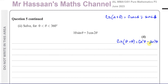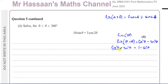Because we have sin θ on the left-hand side, we want to express cos 2θ in terms of sin²θ. Using cos²θ = 1 − sin²θ, we substitute: cos 2θ = (1 − sin²θ) − sin²θ = 1 − 2sin²θ. You should be able to quote this form directly in the exam, but knowing where it comes from helps if you get confused.